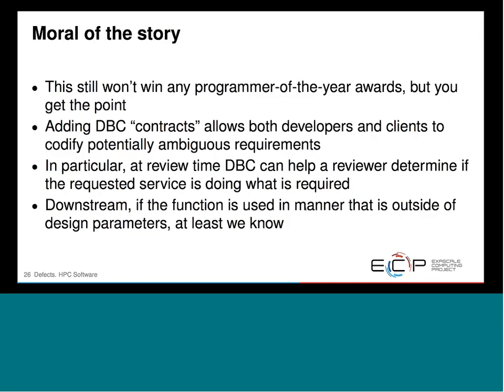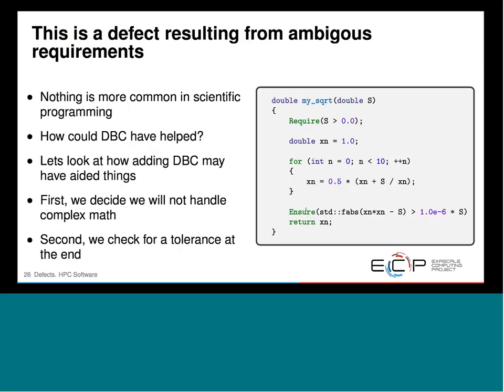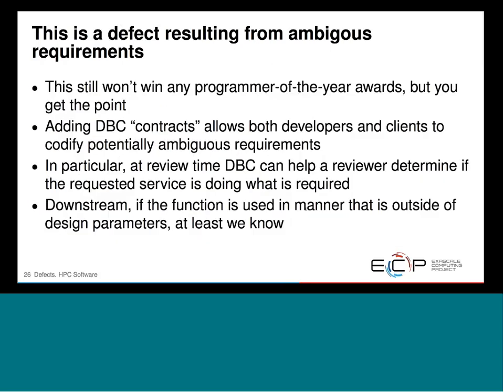That's how we can handle certain things at review time to determine if the requested service is doing what's required. Downstream, even if the function is used outside of its design parameters, the require and ensure statements throw C++ exceptions. If someone needs a tolerance of 1e-14 or whatever IEEE tolerance is required, at least when they call this they'll get a message saying the calculation didn't converge to the expected tolerance — pinpointing where errors are coming from.